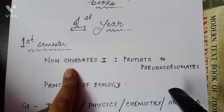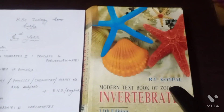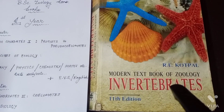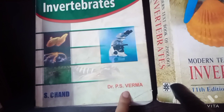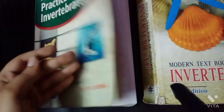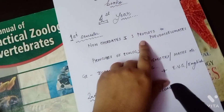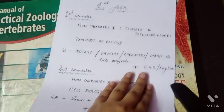Our first subject is Non-chordates — Protists to Pseudocoelomates. For this, RL Kotpal is recommended. This book is recommended for Non-chordates for the first semester (Protists to Pseudocoelomates), and for the second semester (Non-chordates — Coelomates), the same book, RL Kotpal, is recommended. So for Non-chordates, both first and second semester, RL Kotpal is the book.